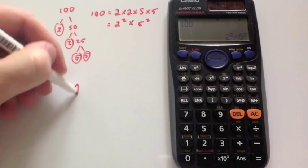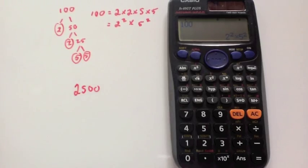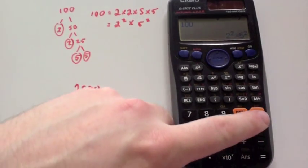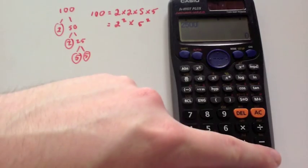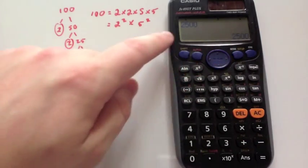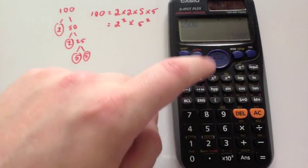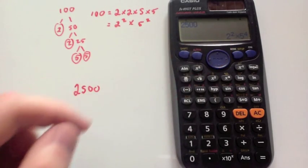For instance, if I wanted to write 2500 as a product of primes, I would type in 2500, press equals and it will appear there. Press shift and press fact, and it will show 2 squared times 5 to the power of 4.